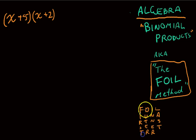Okay, so First, Outer, Inner, Last. Now it applies to questions that look like this. Now this is a very particular type of question called a binomial product or a binomial expansion. You can see we have two sets of brackets and there's no space in between them, which means that they're multiplied together. So it's x plus 5 times x plus 2.